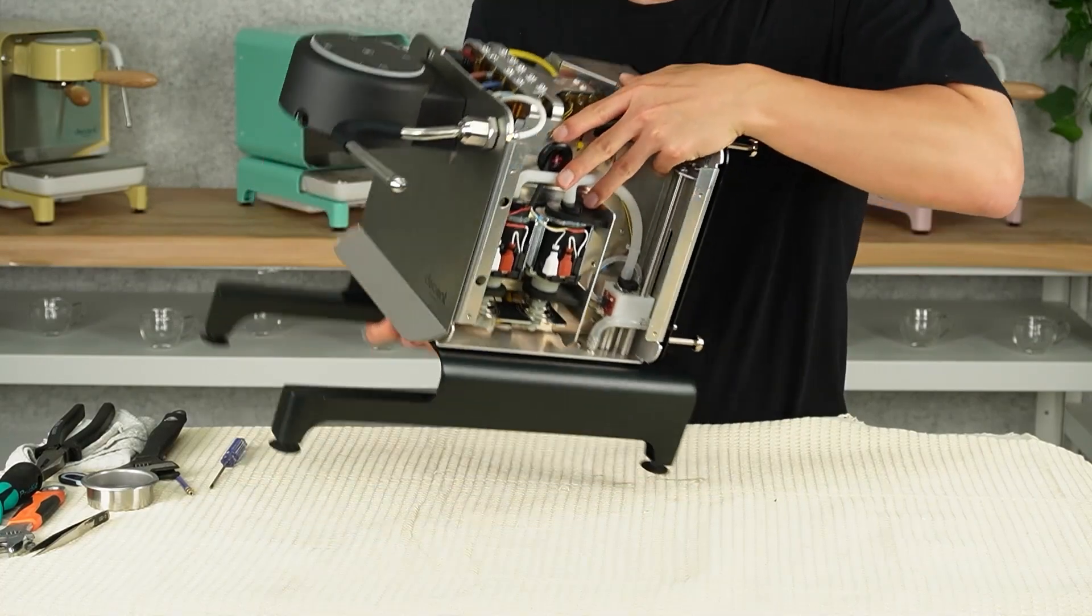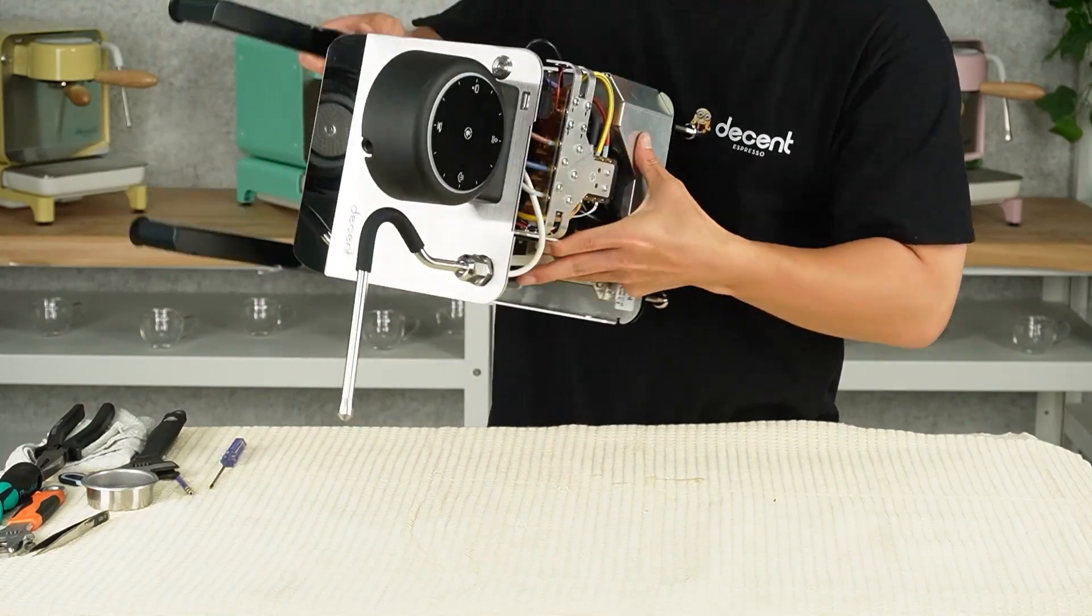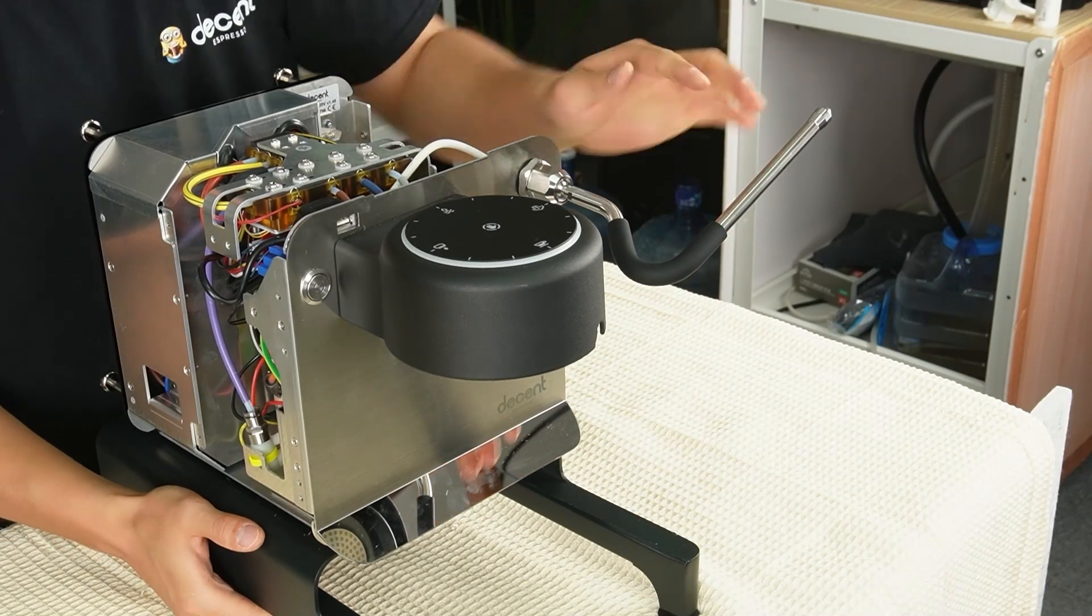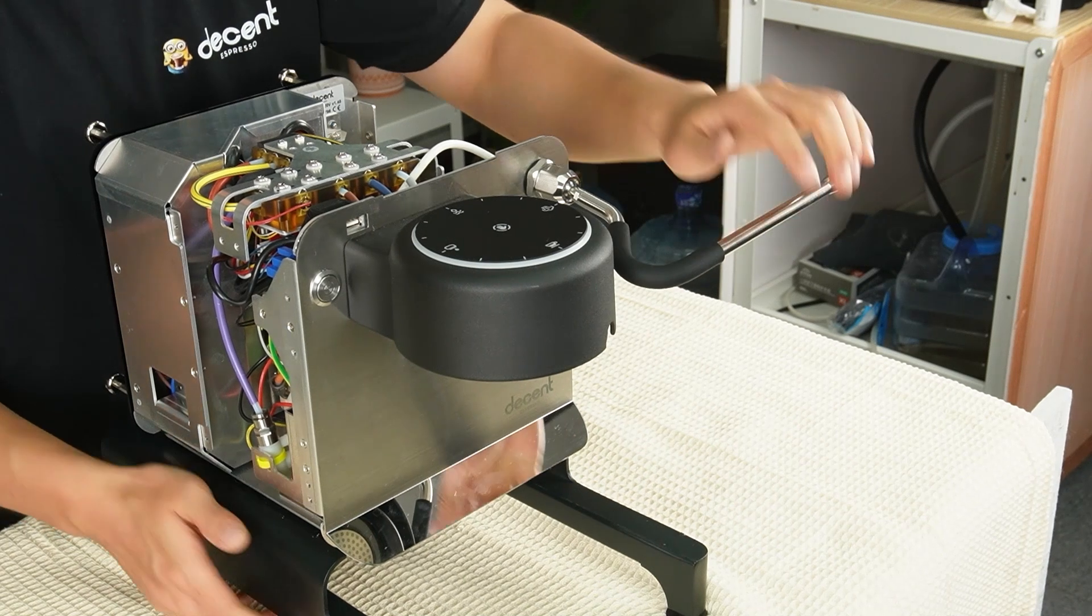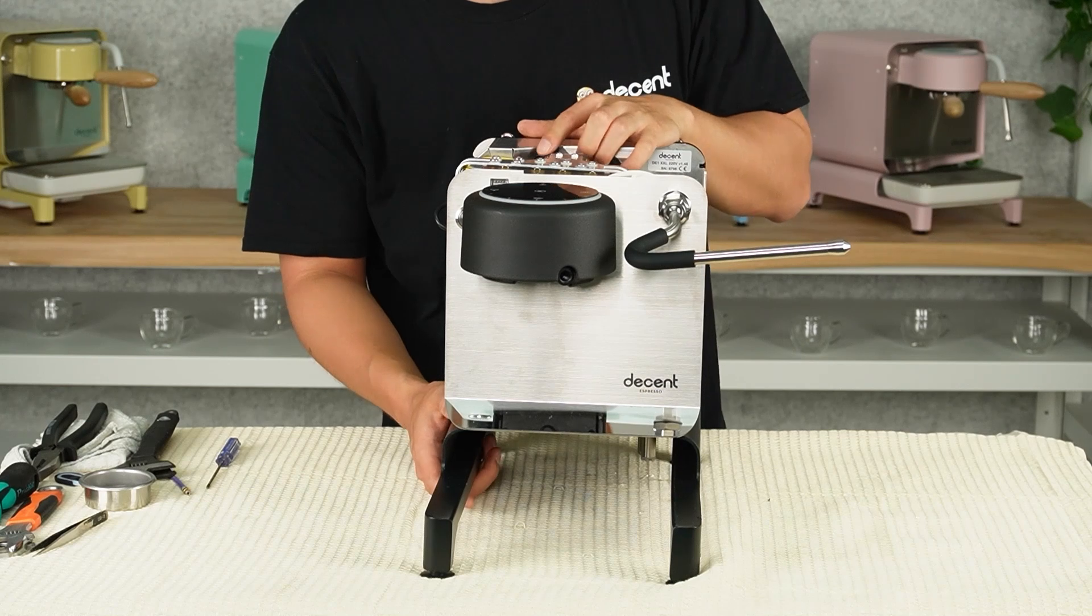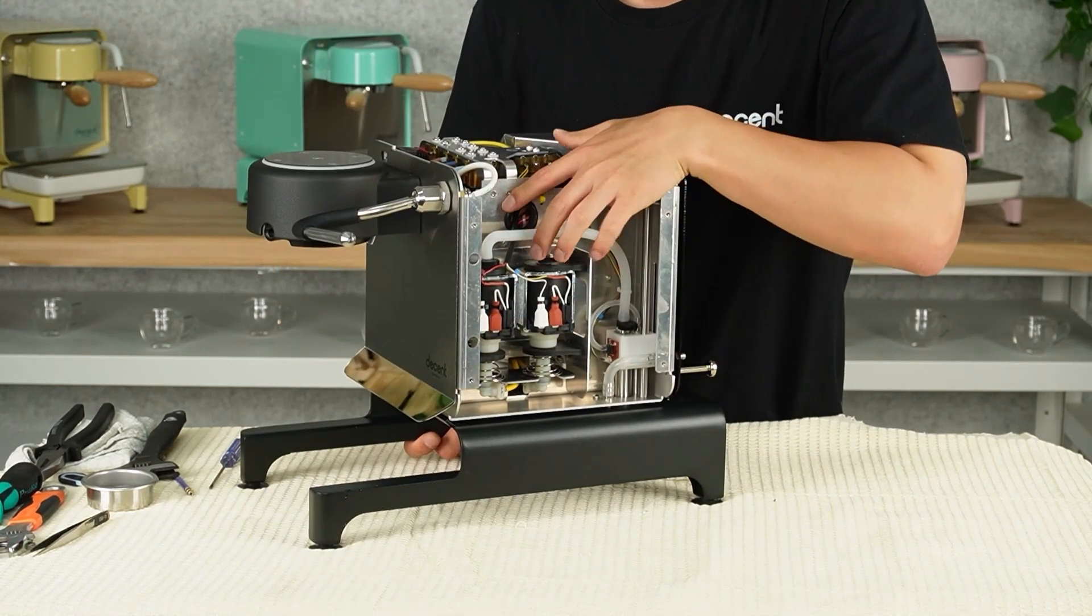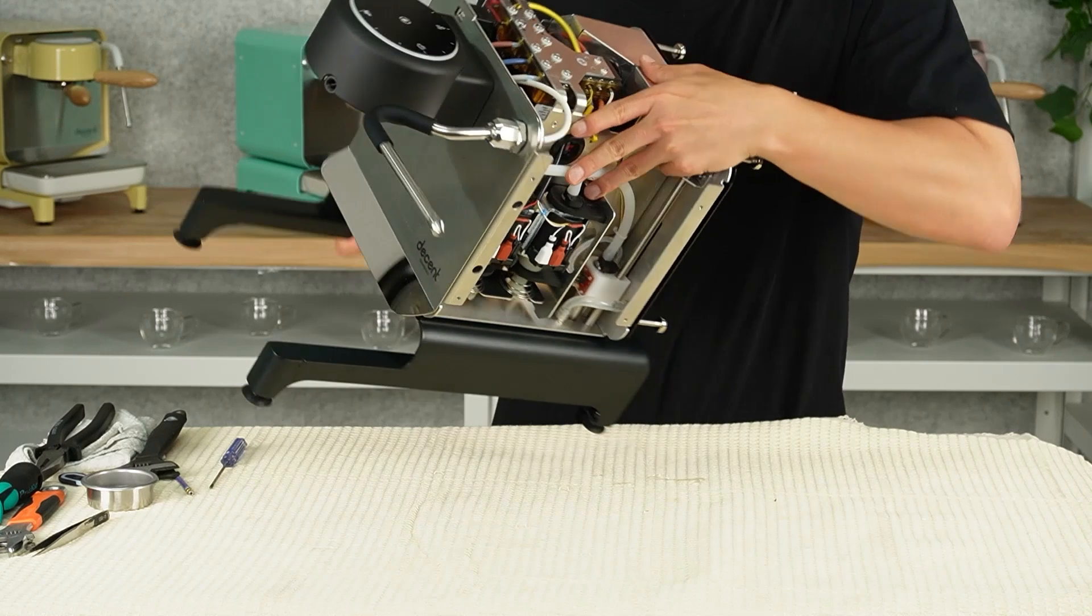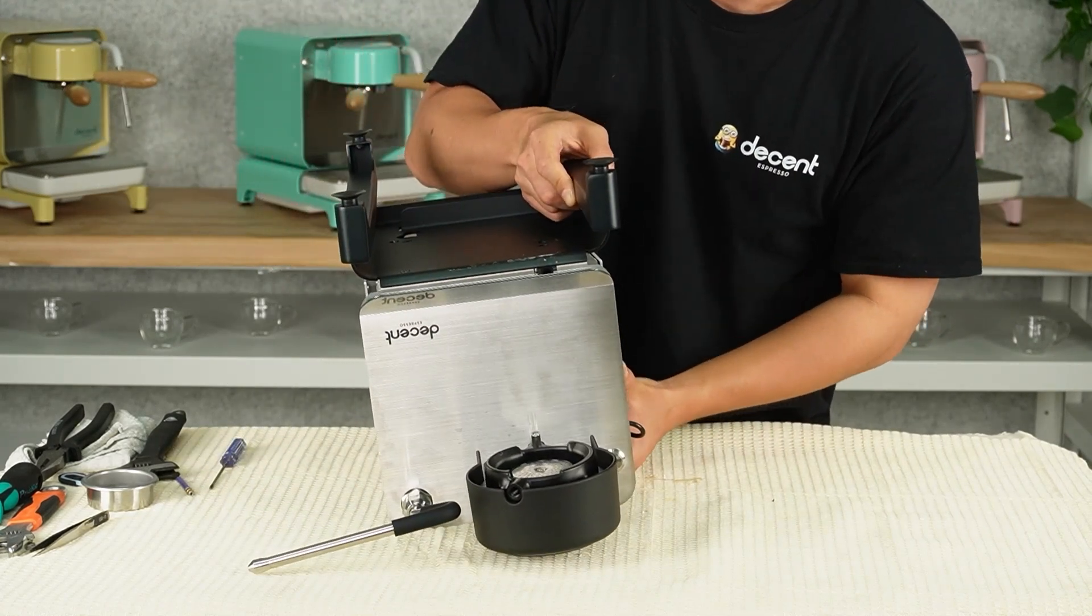We need to put the machine upside down to access the screw holding the group head cover. Before that, place a cloth on the tabletop. Rotate the steam wand to a horizontal position to prevent it from getting in the way. Grab the middle back side of the leg with one hand, support the machine with the other hand while flipping it, and gently place it on the cloth.